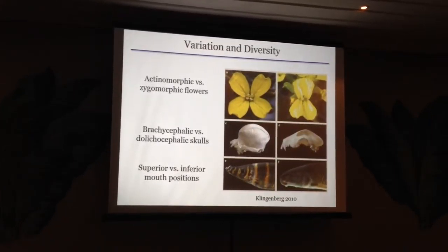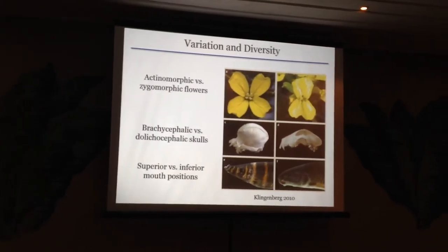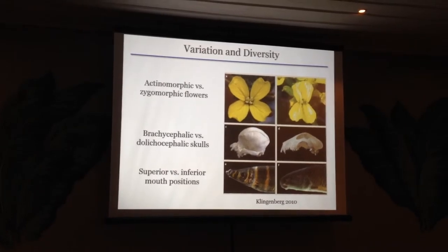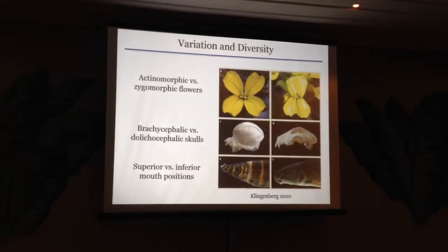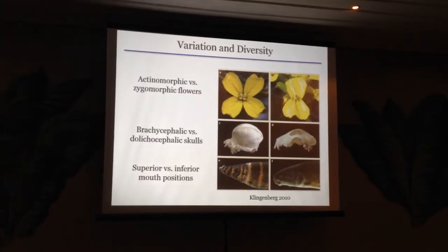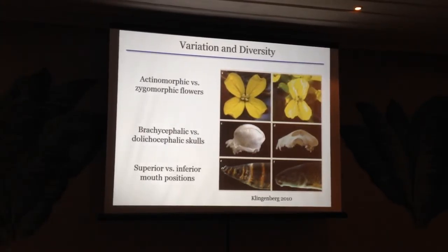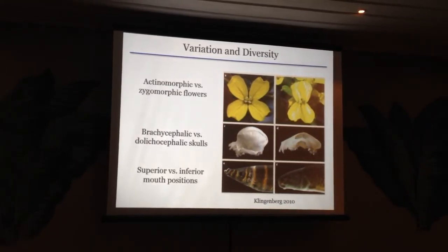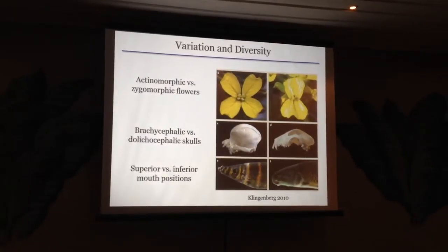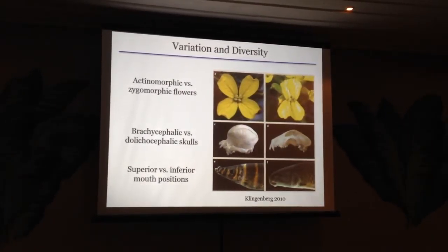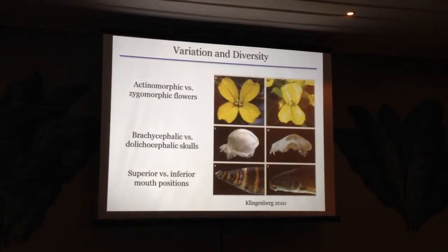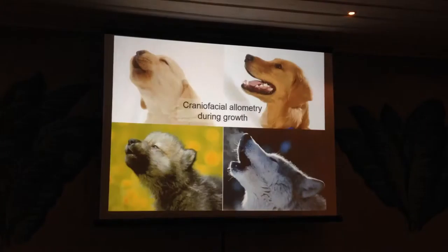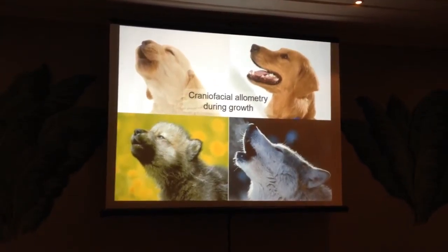This is a plate from a paper by Klingenberg showing some major axes of morphological variation, whether intra- or inter-specific, across different groups of organisms. We have variation in certain flowering plants from actinomorphic to zygomorphic flower structure. In vertebrate skulls — which you've seen a lot of this afternoon — from foreshortened brachycephalic skulls to elongate dolichocephalic skulls. And in different groups of vertebrates, including fishes, mouth positions can vary from more dorsal to more ventral. These patterns are highly regular among the higher taxa and emerge during development.